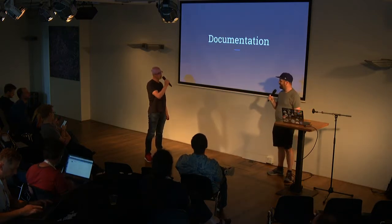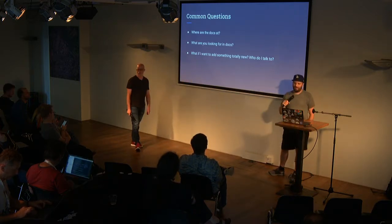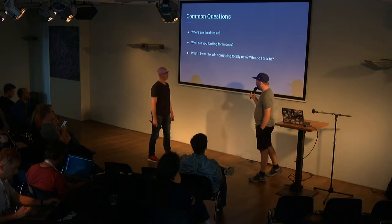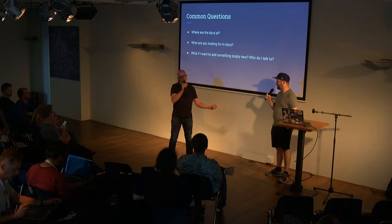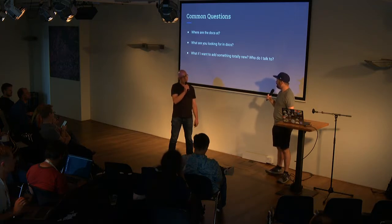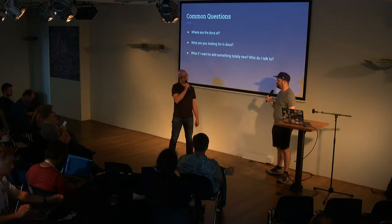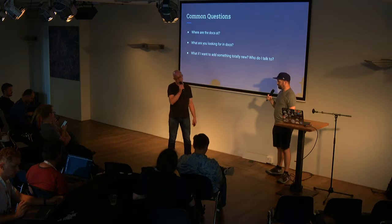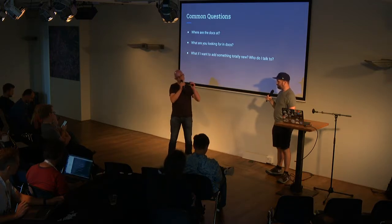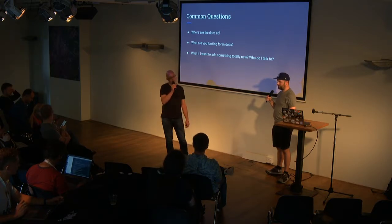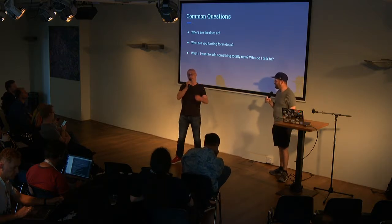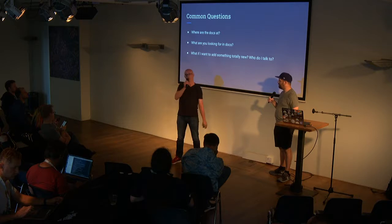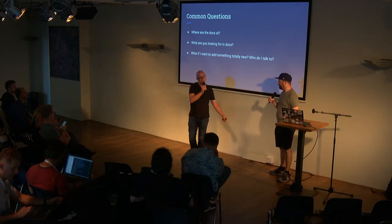Moving on to documentation. Where are the docs? If you're looking for them, do a Google search for 'Helm 3 docs' for the new Helm 3 docs coming out — great work has been done there. For current Helm 2 docs, look for helm.sh/docs or v3.helm.sh/docs. Also go to the community page — we have good docs there around contributing and ways to get started.